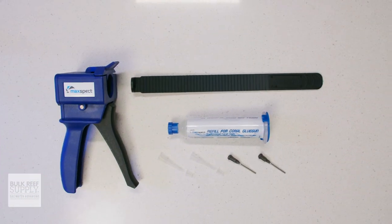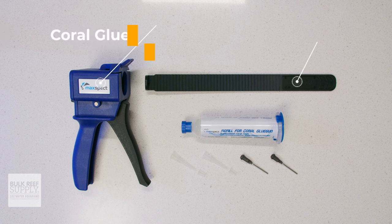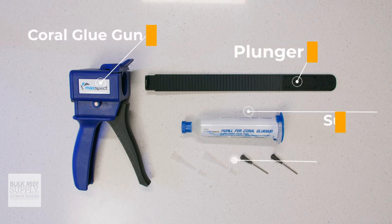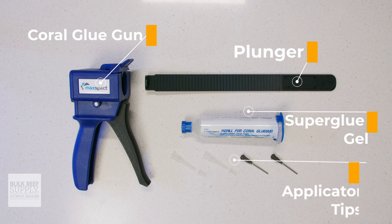When you open up the blister pack, you'll find the Coral Glue Gun, the plunger, a tube of superglue gel, and four applicator tips, two metal, and two plastic with caps.